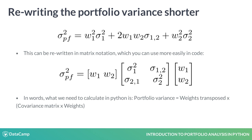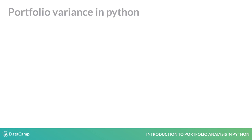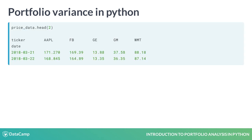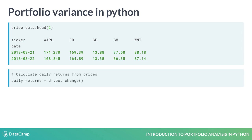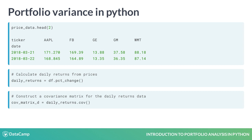This is something we can actually implement easily in Python. Let's start from the beginning by taking the price data again. First, remember to calculate the daily returns using the percentage change function, as we need to calculate variance from our set of returns, not from prices. Then, we can let Python calculate our covariance matrix for us very easily.